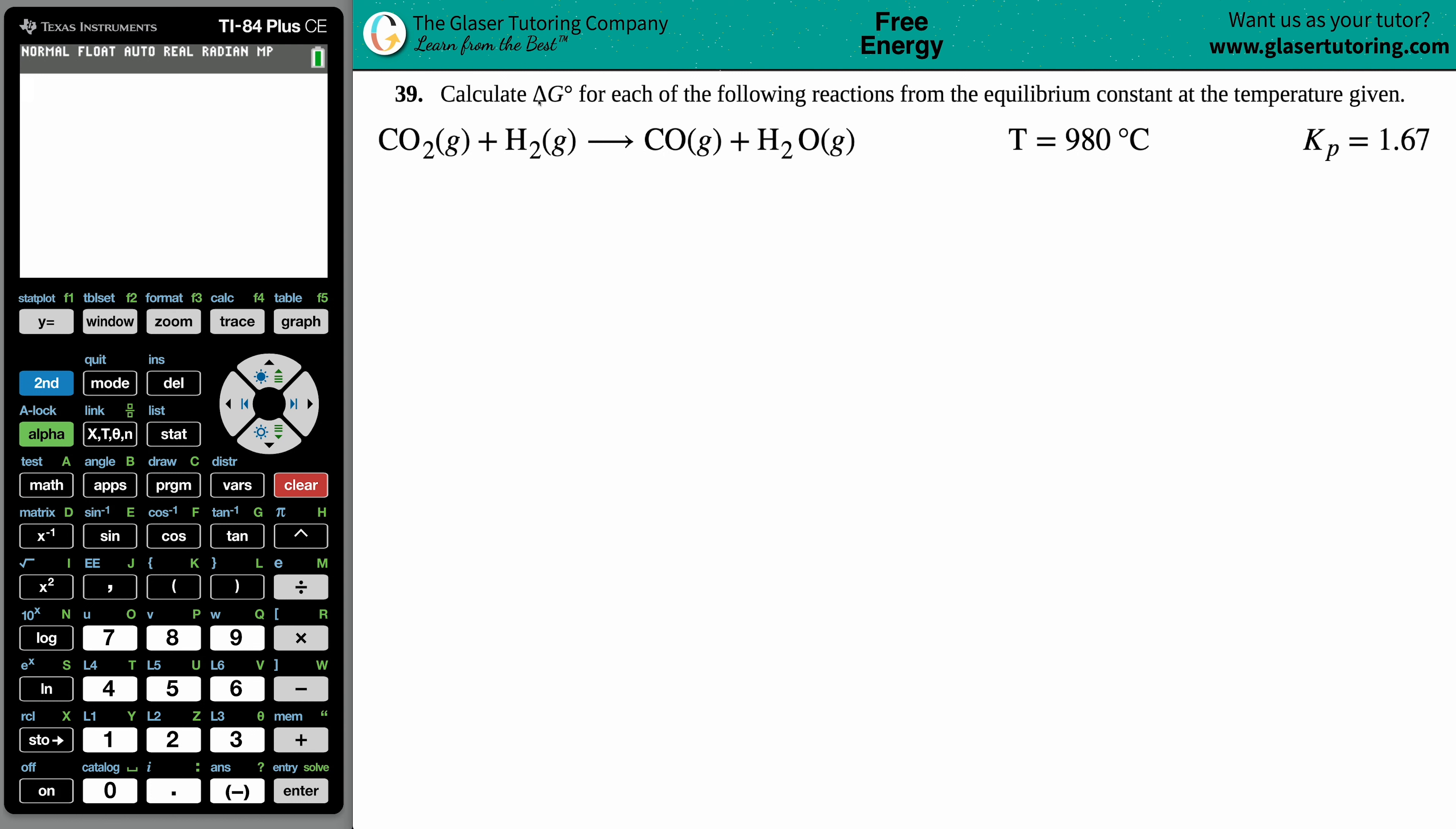Number 39: Calculate ΔG° for each of the following reactions from the equilibrium constant at the temperature given. In this case we have CO₂(g) + H₂(g) yields CO(g) + H₂O(g). They told us the temperature is 980°C with an equilibrium constant of 1.67.